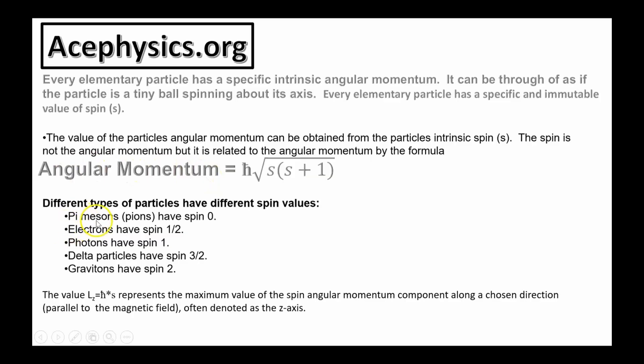And these are the different spin values of various particles. For example, a pi-meson, also known as a pion, has a spin 0. Therefore, it has an angular momentum of 0, because if you replace s with 0, you get h-bar times 0. By the way, h-bar has units of angular momentum. An electron has a spin of 1 half. If you replace s with 1 half, you see that the electron has an angular momentum of the square root of 3 by 2 times h-bar.